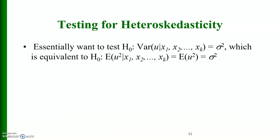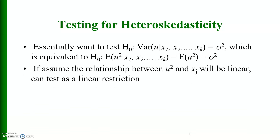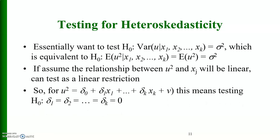Testing for heteroscedasticity: we want to test H-naught that the variance of u_i given x1 through xk equals sigma squared, which is equivalent to testing that the expected value of u squared given x1 through xk equals sigma squared. If we assume the relationship between u squared and x_j is linear, we can test this as a linear restriction: u squared equals sigma naught plus sigma 1 x1 up to sigma k xk plus v. Testing H-naught: sigma 1 equals sigma 2 up to sigma k equals 0.